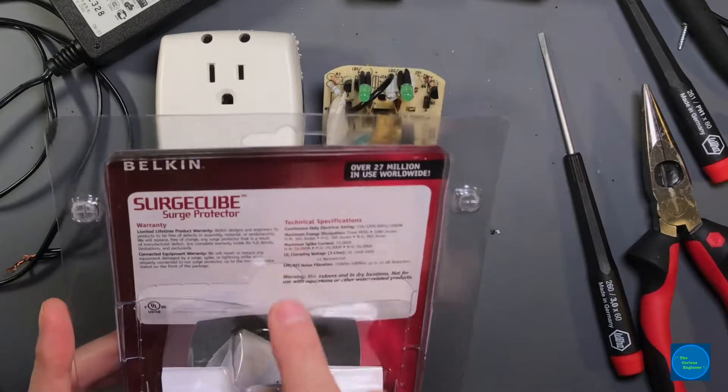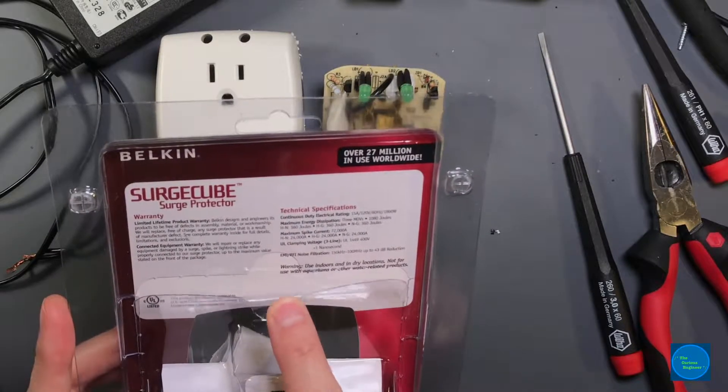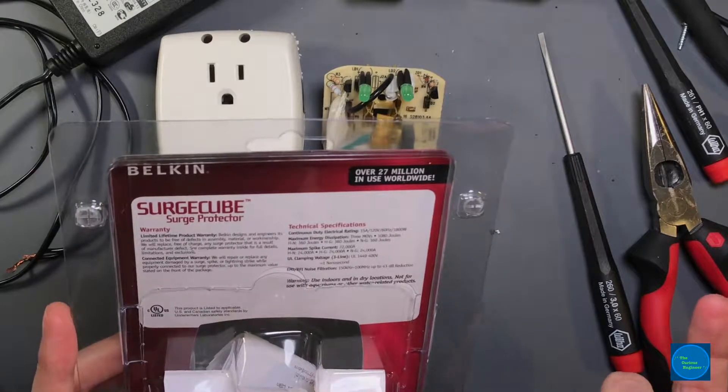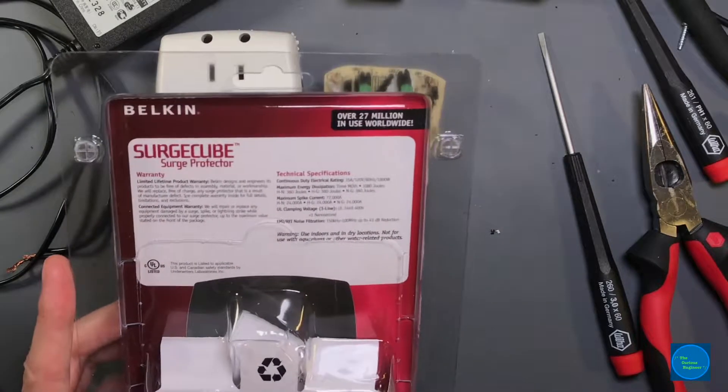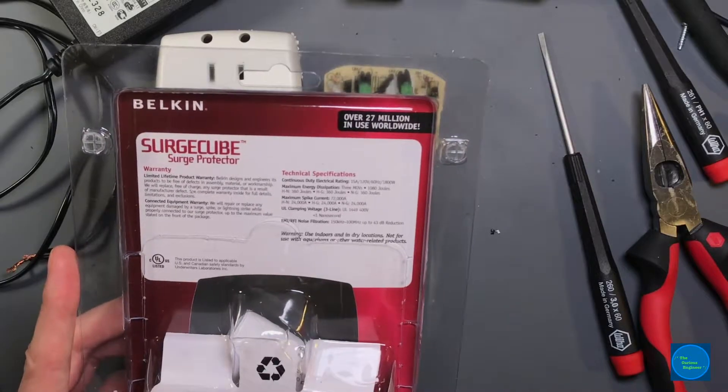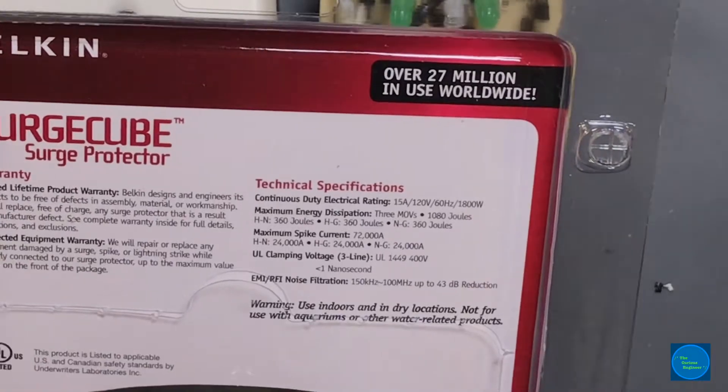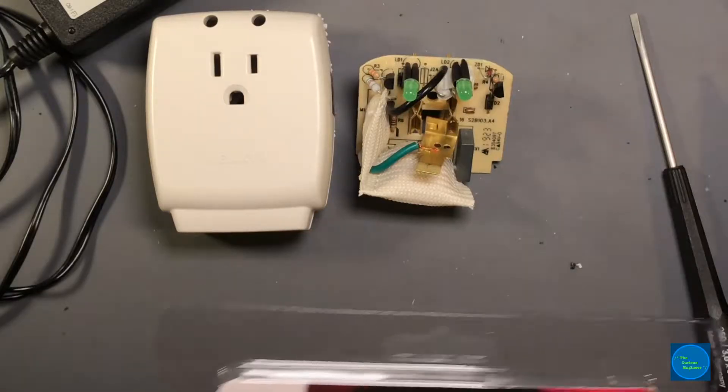The EMI RFI noise filtration is 150 kilohertz to 100 megahertz at up to 43 dB reduction. We'll get to that in a moment as well. These are the ratings that typically you'll see on surge suppression devices. That's what it is.